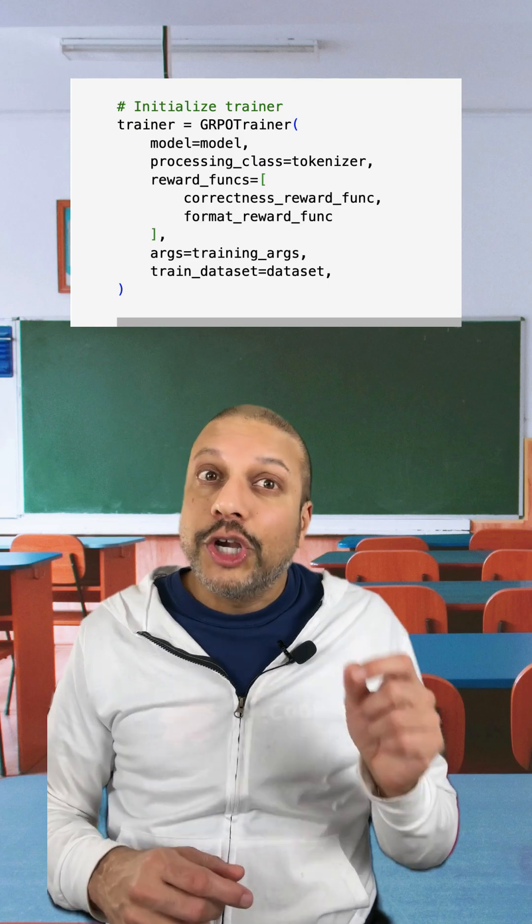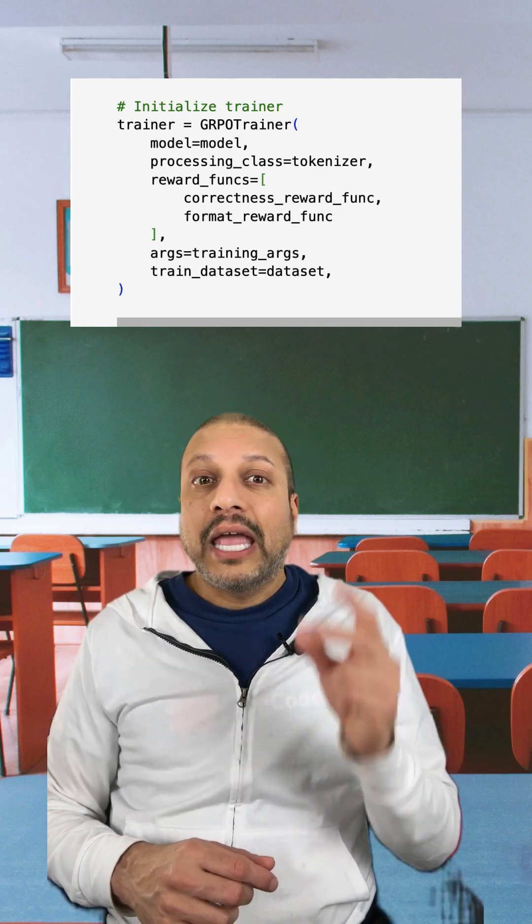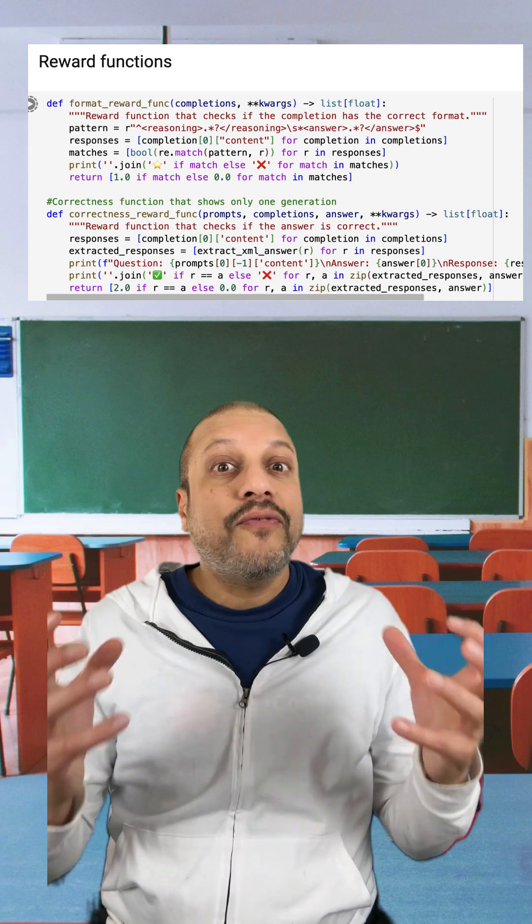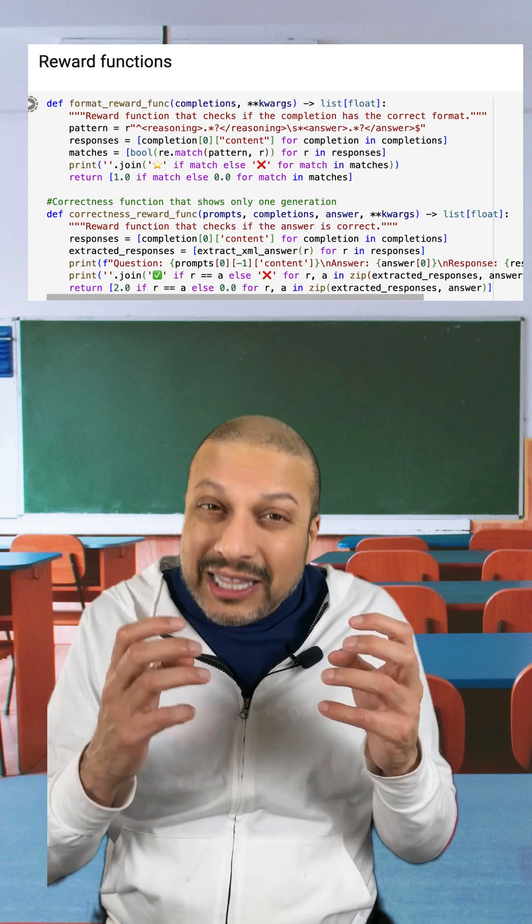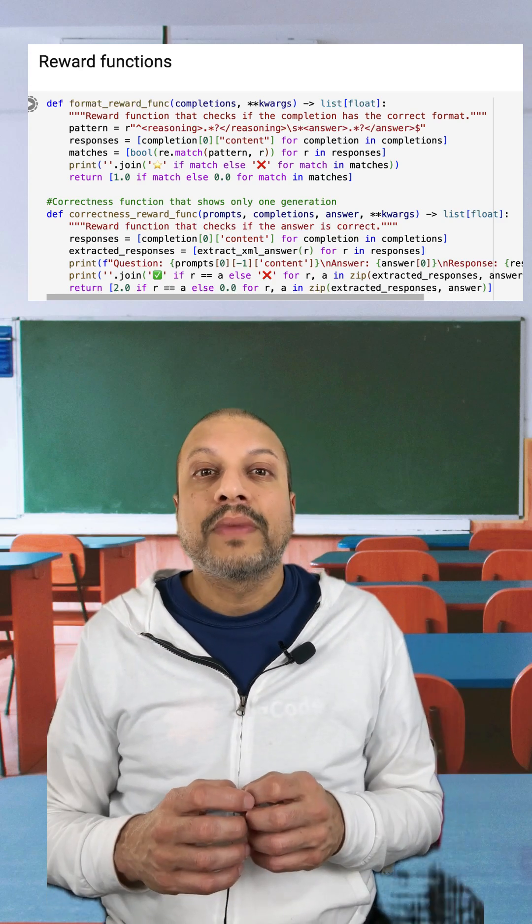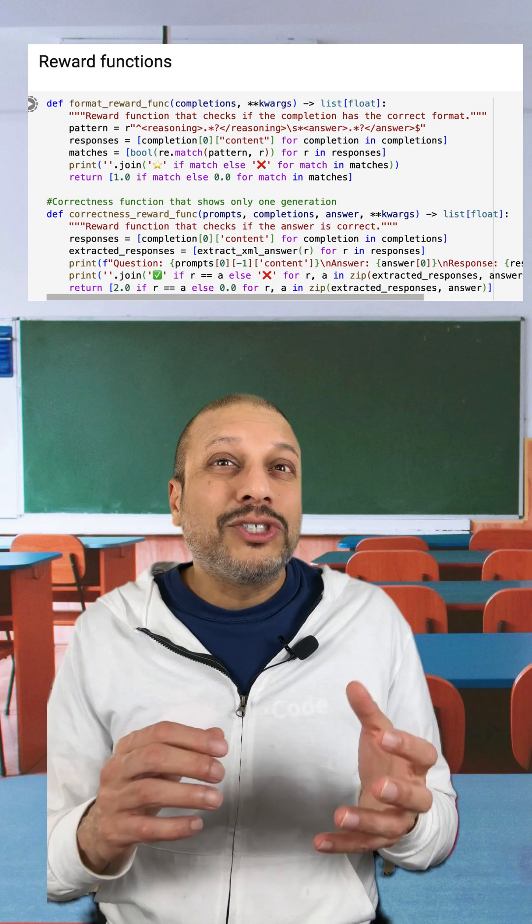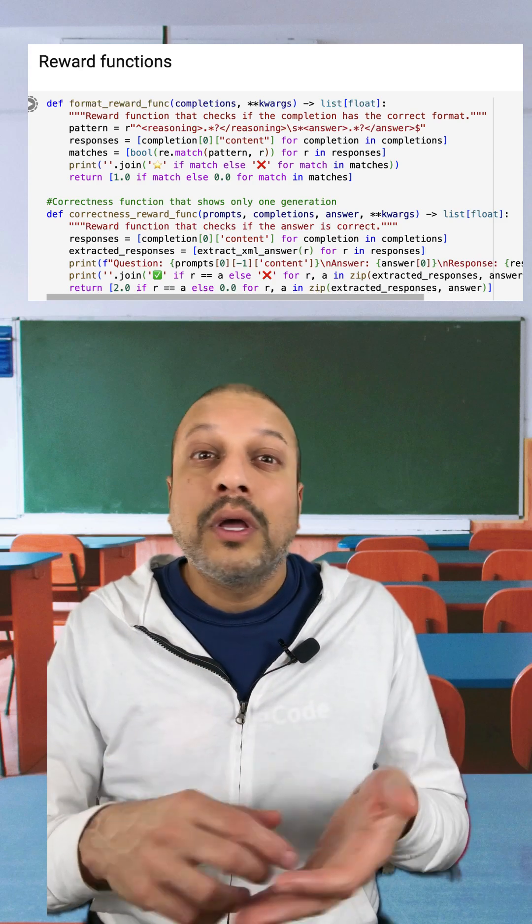Let me show you. We'll start by using the GRPO Trainer from Hugging Face, and here we give it two rewards. The first is a format reward. That's because I need the model to think in a structured way.